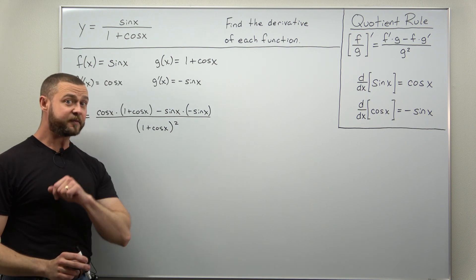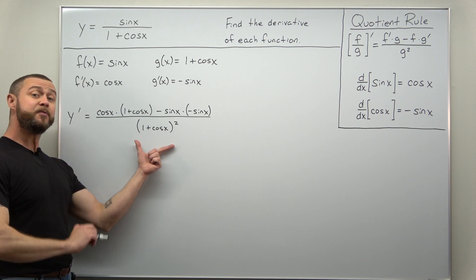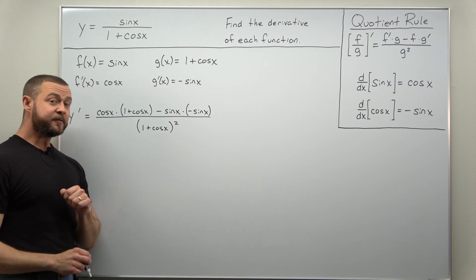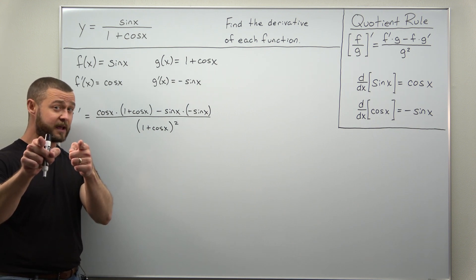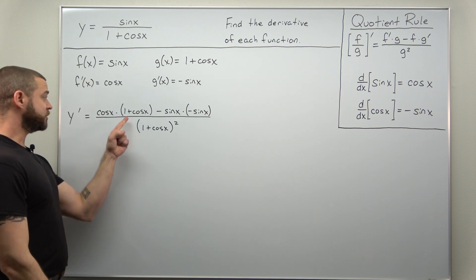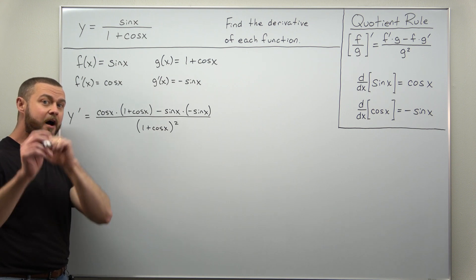All right now to simplify this one tip I like to give my calculus students is keep your denominator factored and that's because if you simplify the numerator you might be able to cancel out a common factor. Now just be careful there's a common mistake here you have 1 plus cosine of x in the numerator but it's not a common factor. That minus or subtraction sign is preventing that.